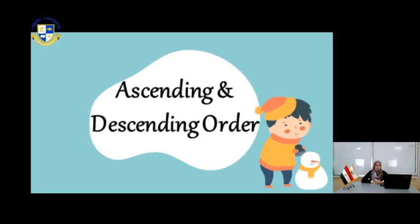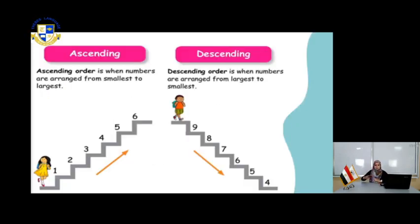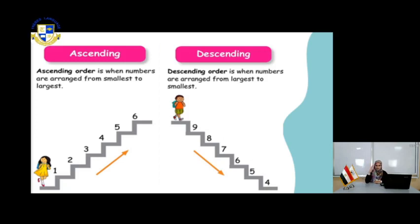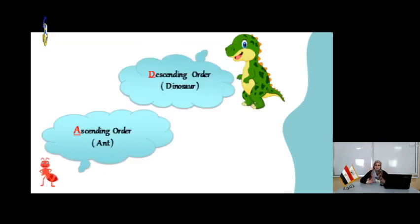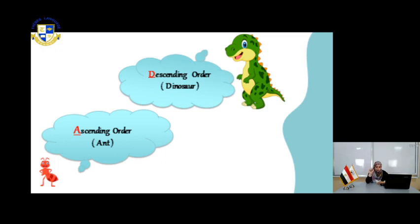We will know together how to find the ascending order and descending order for numbers. Ascending always starts from the small and goes to the big. In descending, you start from the big and go to the small. Because ascending starts with A — think of the ant, which is very small. So for ascending, you search for the small ant number. For descending, think of the dinosaur — D is big, so descending means you start with the big.